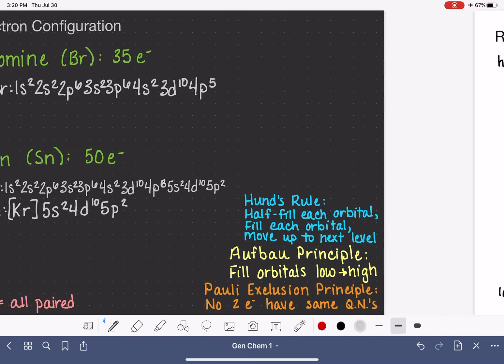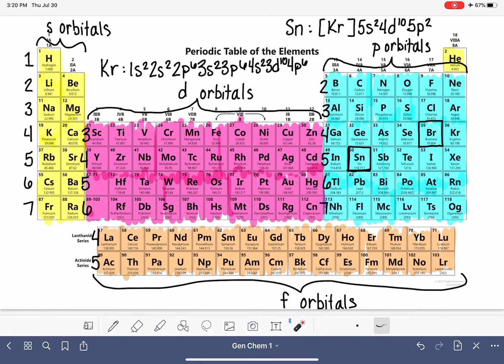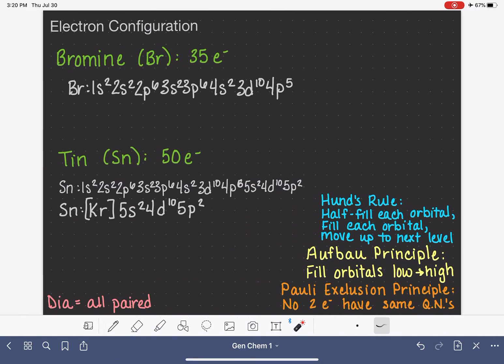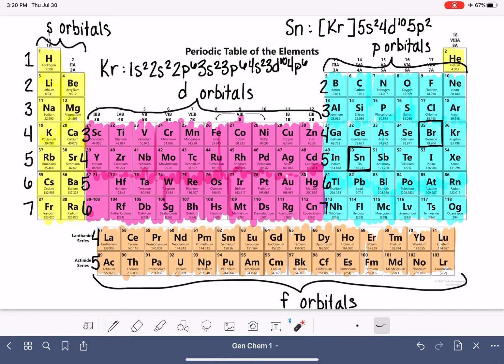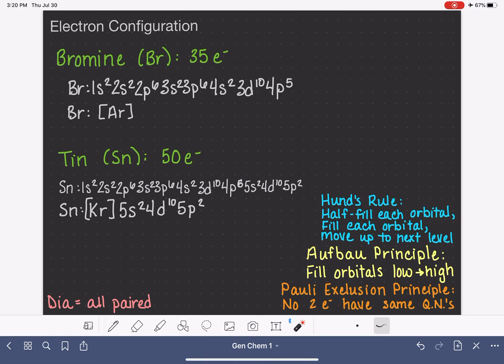For bromine, again, anytime with any element, we always want to abbreviate with the previous noble gas. So for bromine, we would abbreviate with argon and continue from there. Let's write in our argon abbreviation first. Bromine's electron configuration abbreviated with argon. And that argon is going to represent everything all the way through. Argon goes all the way through 3s², 3p⁶. So argon gives us everything through 3p⁶, and we pick up at 4s², 3d¹⁰, 4p⁵.